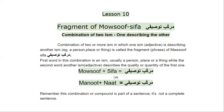The first word in the combination is an ism — usually a person, place, animal, or thing — while the second word is another ism. We know that in Arabic, an adjective is also an ism, like ism sifth. So it's a combination of ism zaat with ism sifth.